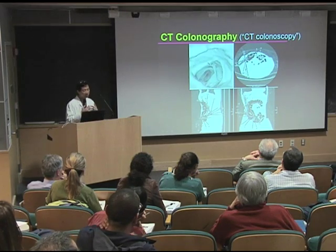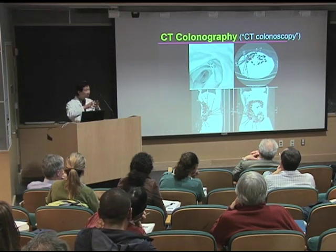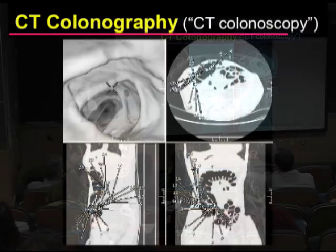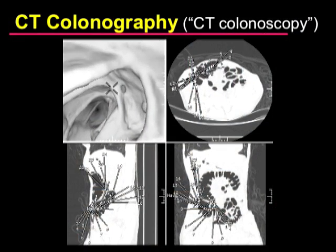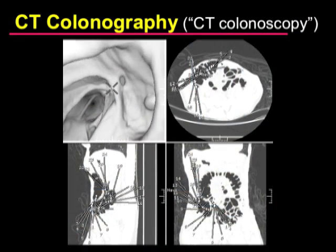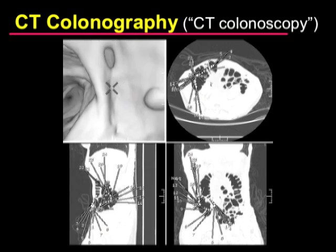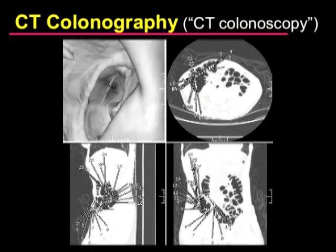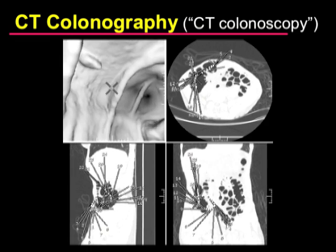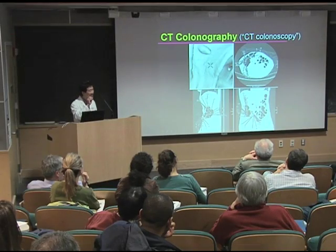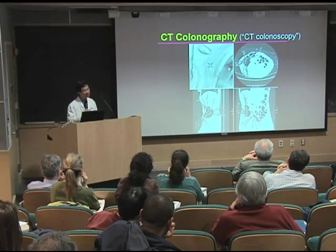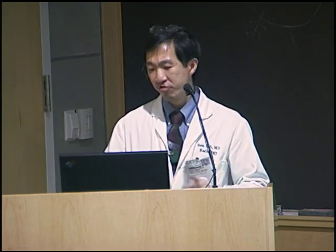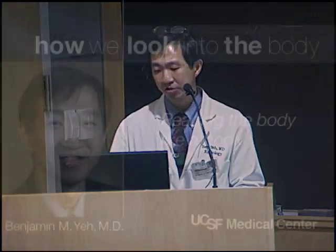We can also get a three-dimensional fly-through movie. This is called CT colonography, which is another way to look for polyps in the colon. We can look at these in three dimensions and localize exactly where that polyp is for the colonoscopist or surgeon to remove these structures.